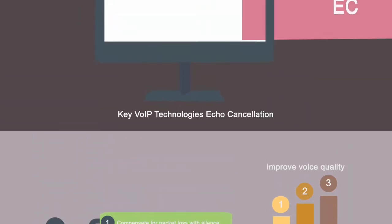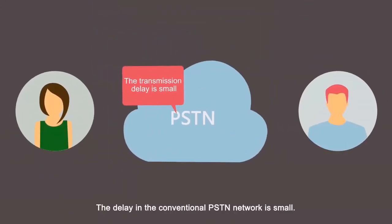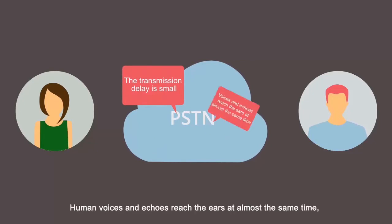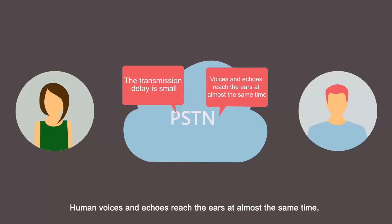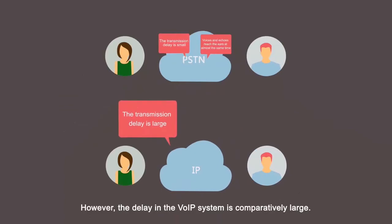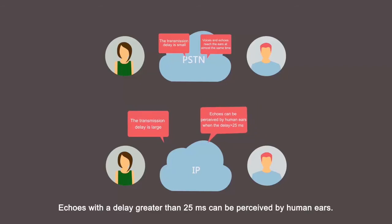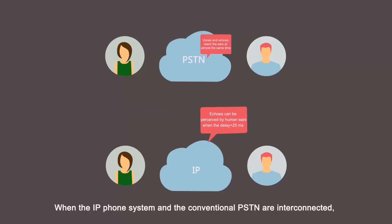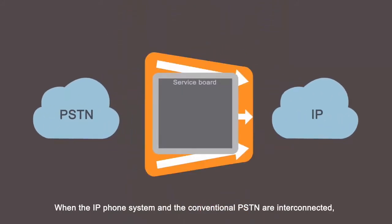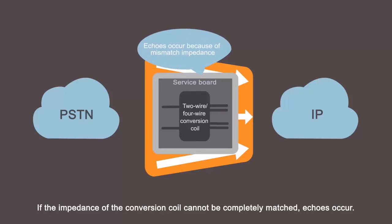Key VOIP technologies: Echo Cancellation. The delay in the conventional PSTN network is small, so human voices and echoes reach the ears at nearly the same time and echoes are not perceived. However, the delay in the VOIP system is comparatively large. Echoes with a delay greater than 25 milliseconds can be perceived by human ears. When the IP phone system and the conventional PSTN are interconnected, the two-wire to four-wire conversion is involved. If the impedance of the conversion coil cannot be completely matched, echoes occur.